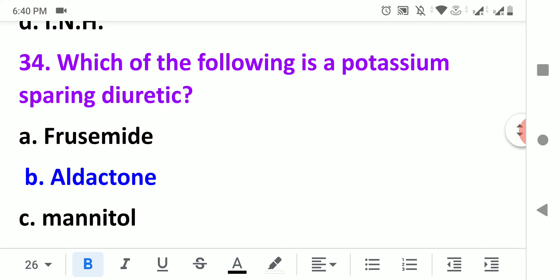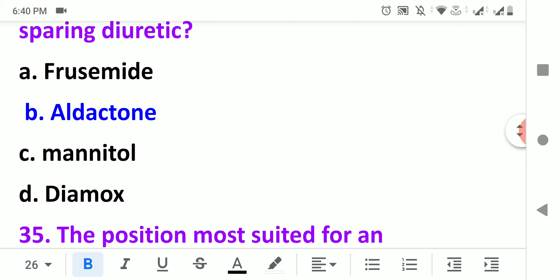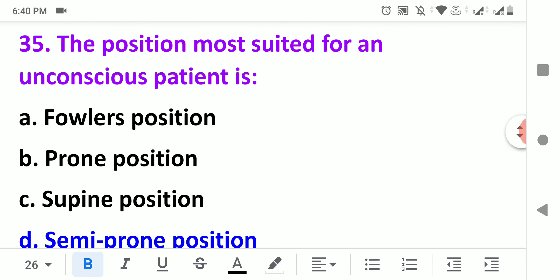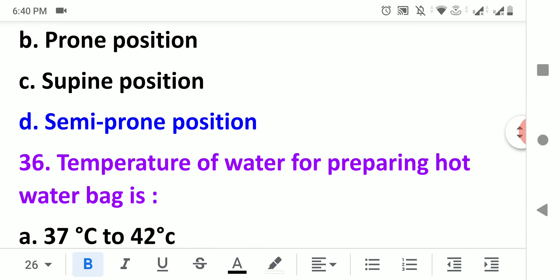Which of the following is a potassium-sparing diuretic? Furosemide is a loop diuretic, mannitol is an osmotic diuretic, and Aldactone is the potassium-sparing diuretic. The position most suited for an unconscious patient is semi-prone position. This position can be given so that the lungs will expand without any stress.